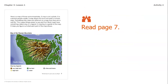Now we're going to go ahead and read page seven. Here's a map of those same mountains. A map is not a photo — it is a picture people create. A map shows the land and water in simple ways. Sometimes the colors are different on a map than they are in real life; this makes things easier to see and find. Most maps have something called a key or a legend. A map key is a guide to the map — it helps you figure out what each part of the map shows.